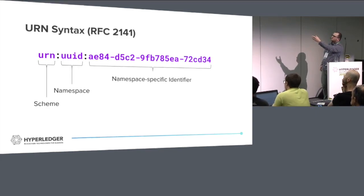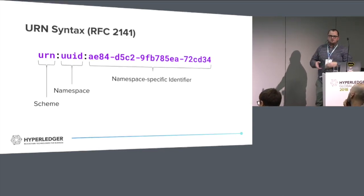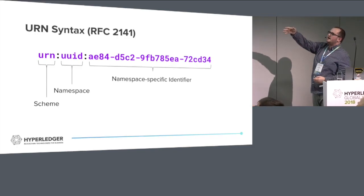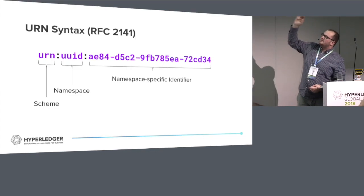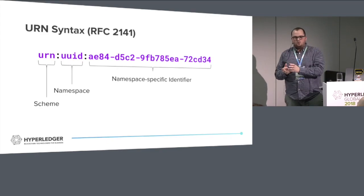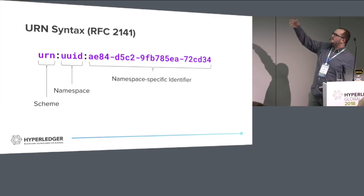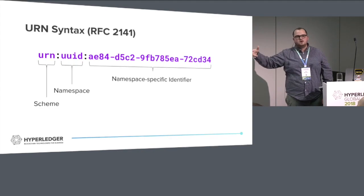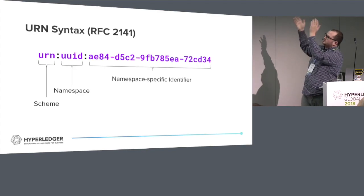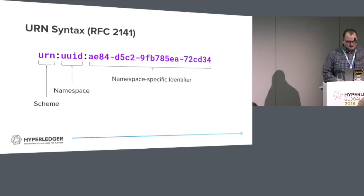There are lots of different things that follow the URI syntax - URN describes it. Then we've got the namespace, which describes where you can leverage this and what the certain properties of it are. Then you've got the actual name-specific identifier, where you create the globally unique identifier. Do some math and get trillions of unique identifiers.